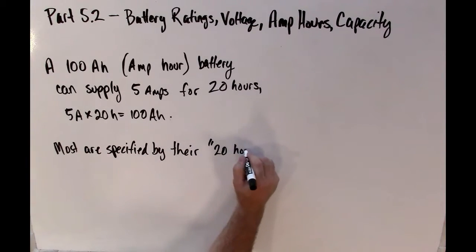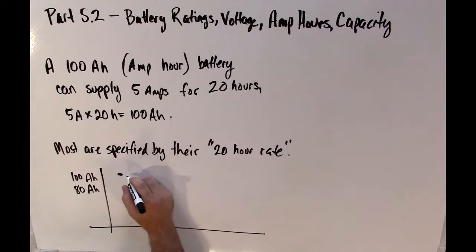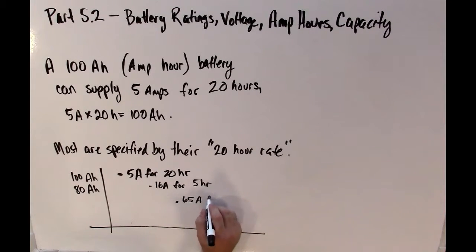You might be tempted to think that 20 amps for 5 hours would also be another way to get 100 amp hours, but it turns out that the battery capacity itself changes depending on the discharge rate. So the 20 hour rate is sort of a standard rate, so you'll find batteries for sale and the discharge rate is a 20 hour rate.